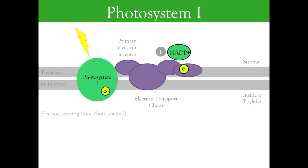In the case of photosystem 1, the high-energy electron is used to convert NADP plus to NADPH, which can carry that energy to the next phase of photosynthesis.